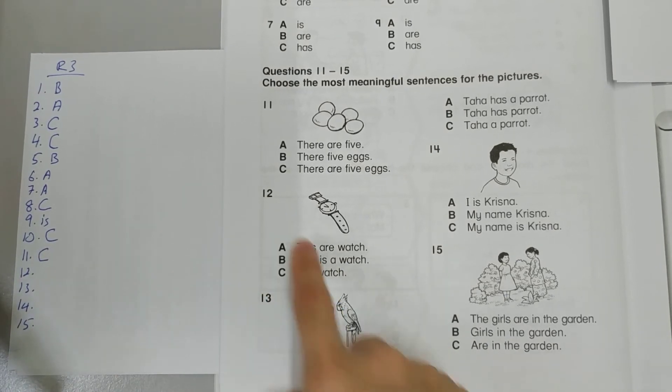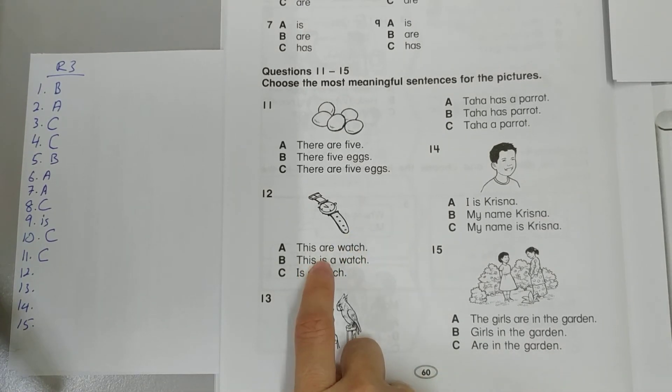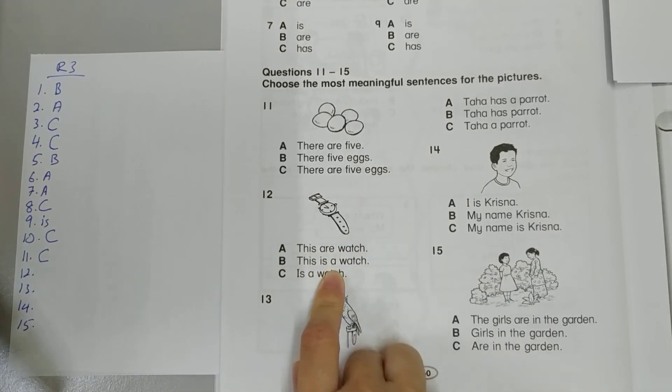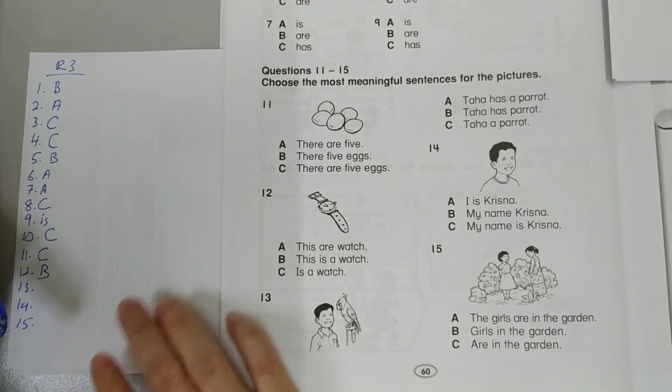Number 12. This our watch? Uh-uh. There's only one watch. This is a watch. Very good. That's the correct one. This is a watch.